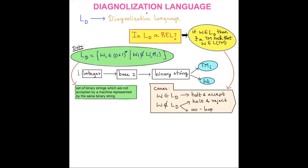We are going to see about the diagonalization language. We will represent L subscript D as the representation of a diagonalization language. The definition of a diagonalization language is the set of binary strings which are not accepted by a machine represented by the same binary string. Mathematically, it is the set of strings w_i belonging to {0,1}* such that w_i does not belong to the language generated by Turing machine i.